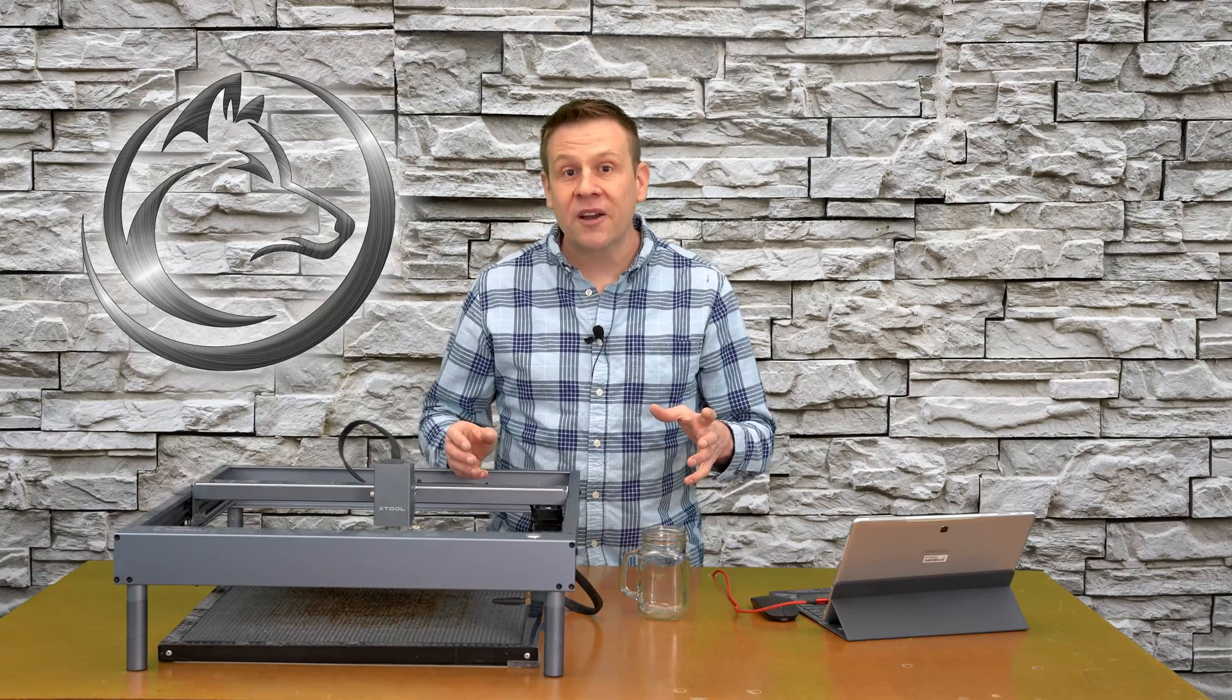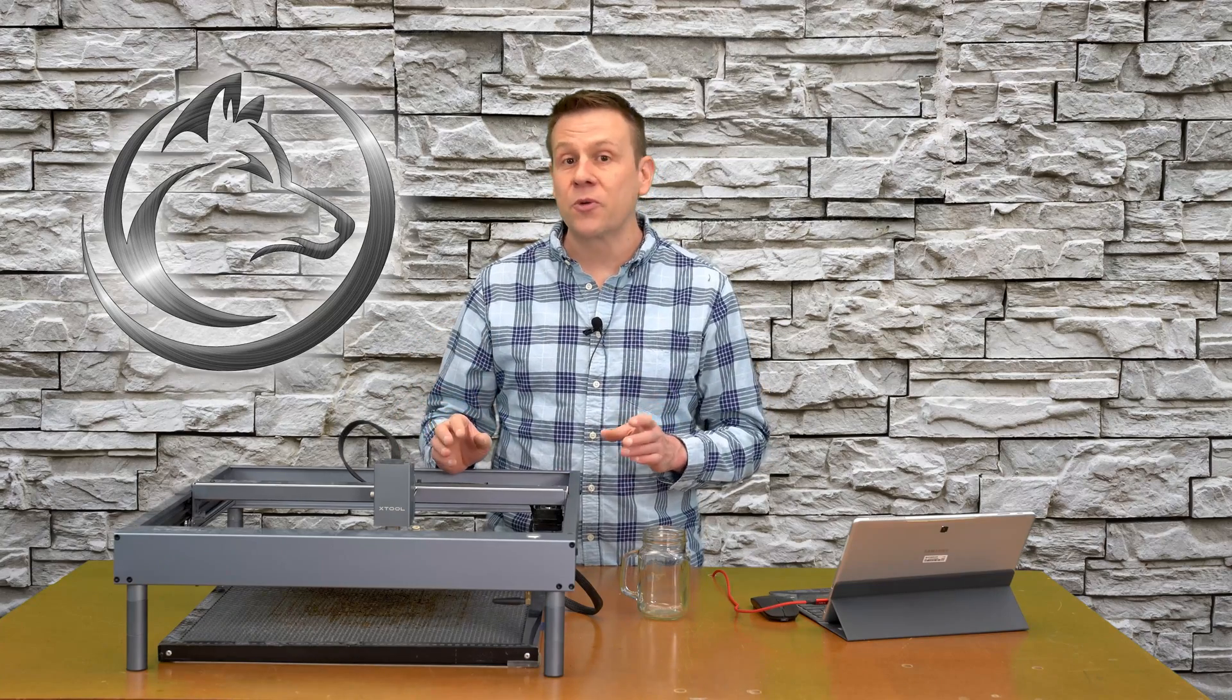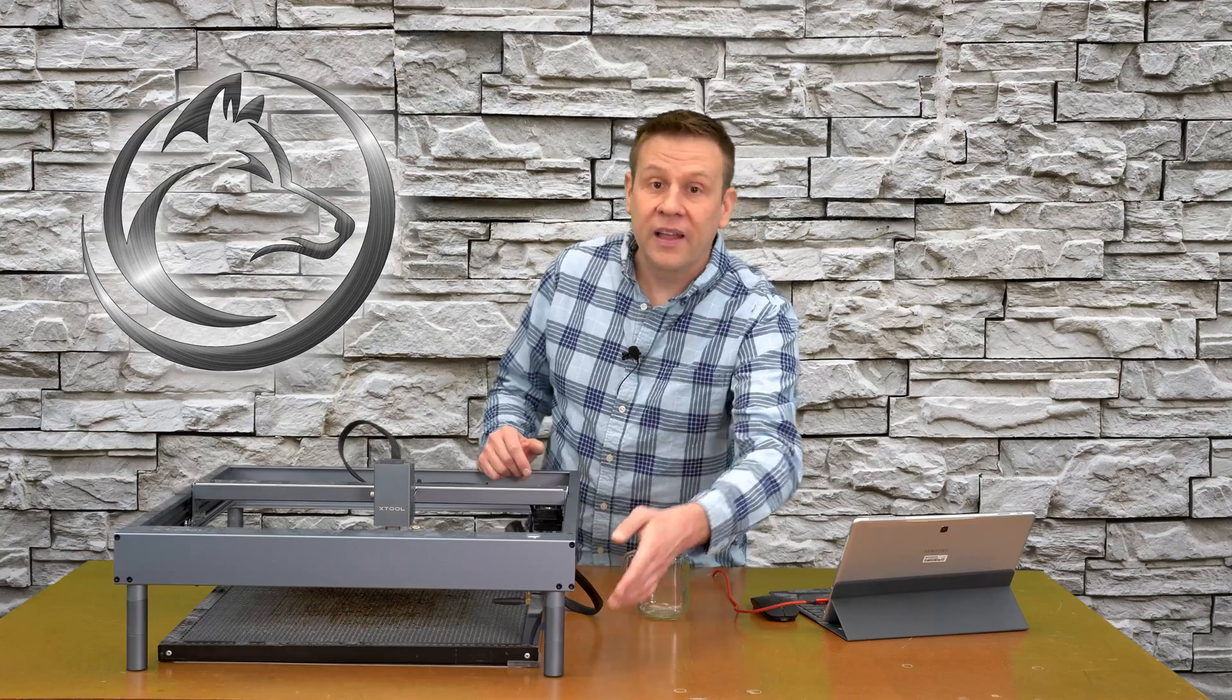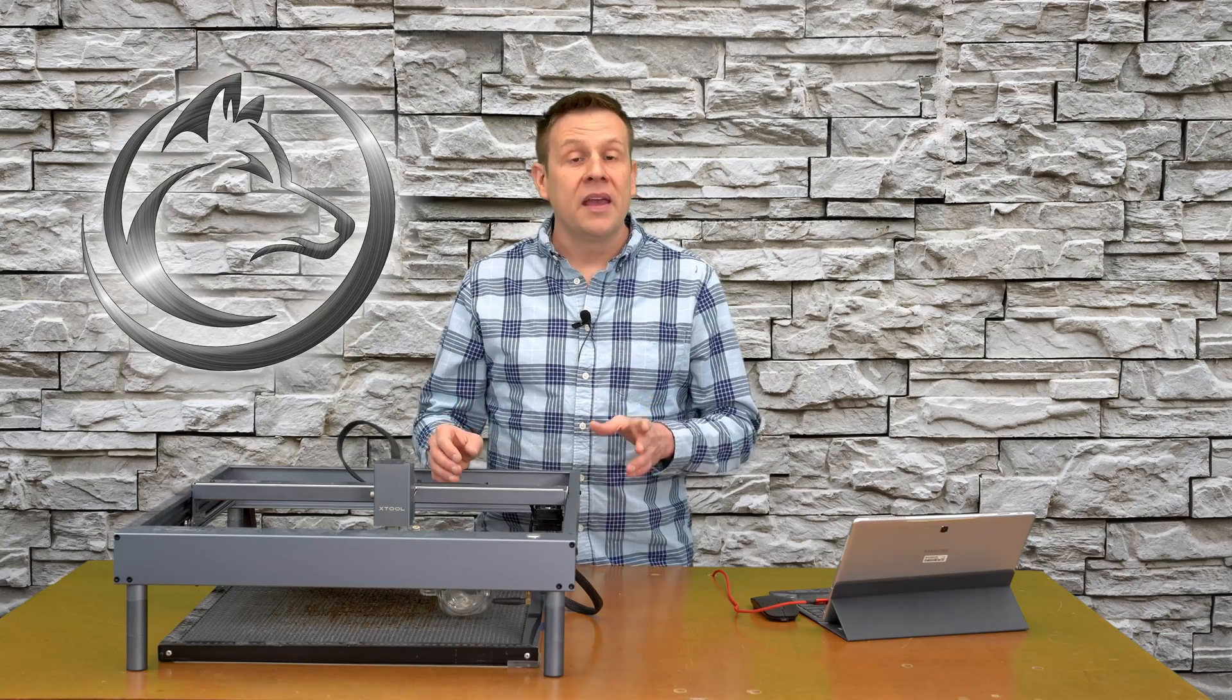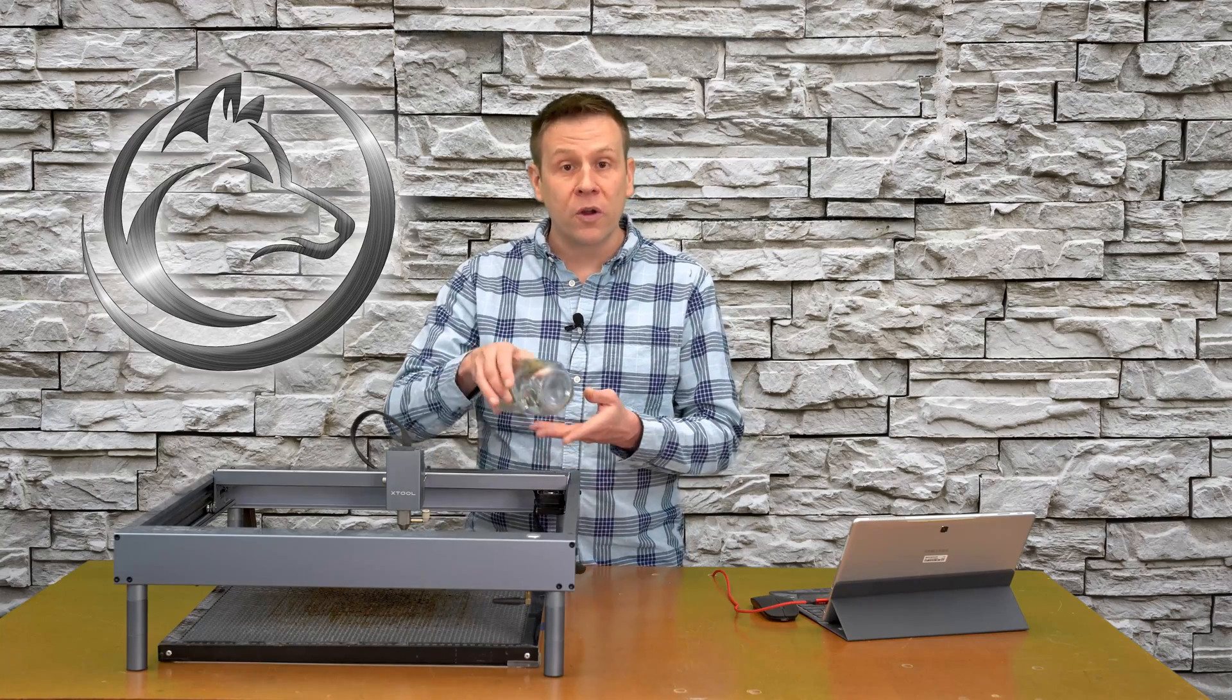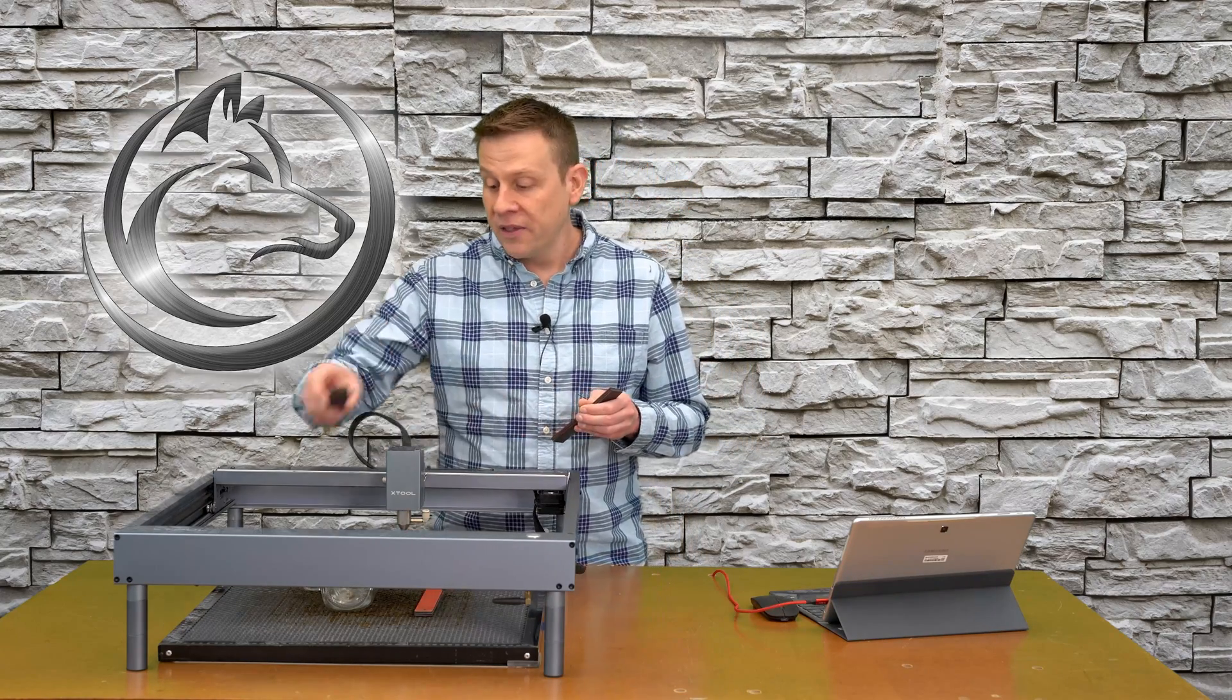With the project materials covered, it's time to check out the machine setup. For this project, I'm using the X-Tool D1 10 watt laser machine. This 10 watt laser module is going to offer plenty of power and speed to quickly create this glass engraving project. In the front, I have two leg extensions installed. Underneath the machine, I have the X-Tool magnetic honeycomb. The really cool thing about this honeycomb is the fact that it is magnetic. I always like to secure my work material into the work area, and that's where I like to use these red magnetic strips that easily adhere down to the honeycomb base.